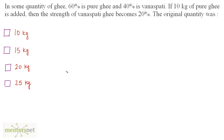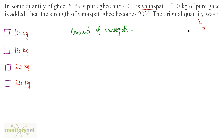In some quantity of ghee, 60% is pure ghee and 40% is vanaspati. If 10 kg of pure ghee is added, then the strength of vanaspati ghee becomes 20%. The original quantity was what? Let us consider the original quantity of the mixture as X. It is said that 40% of the original quantity is vanaspati ghee, so the amount of vanaspati ghee = 40/100 × X. Now, they are adding 10 kg of pure ghee — we are not adding any vanaspati ghee, so the amount of vanaspati remains the same.